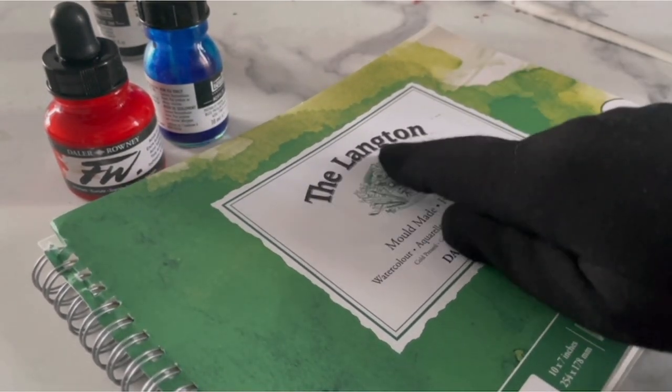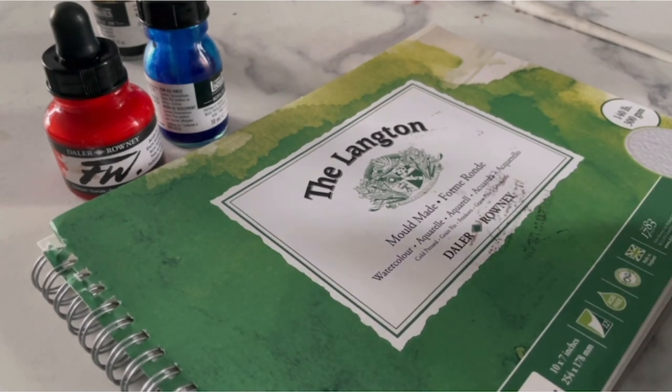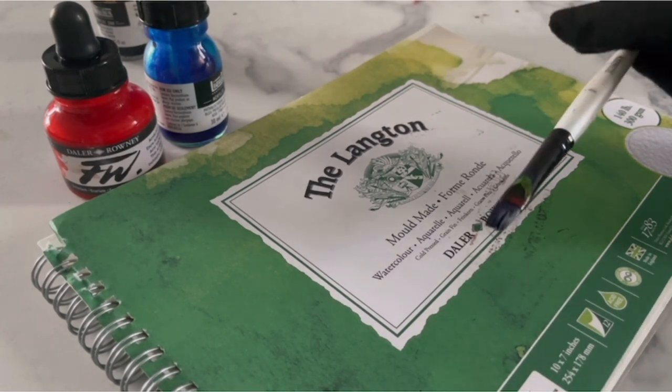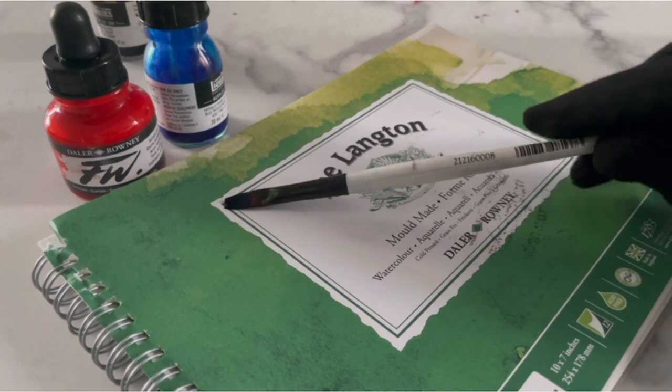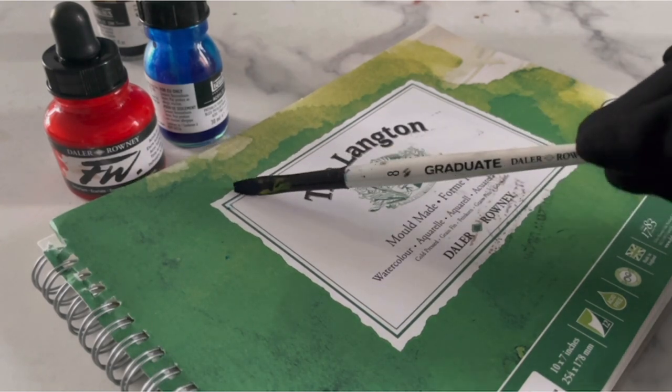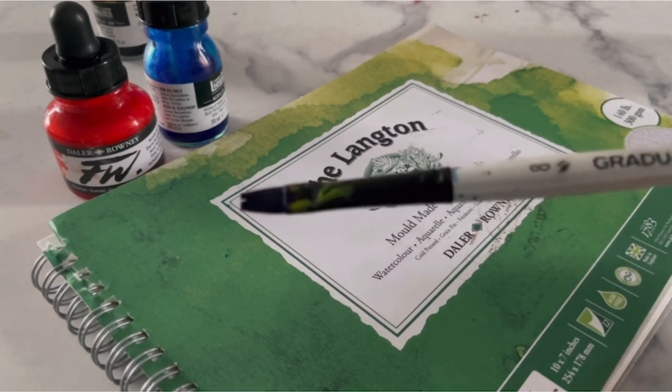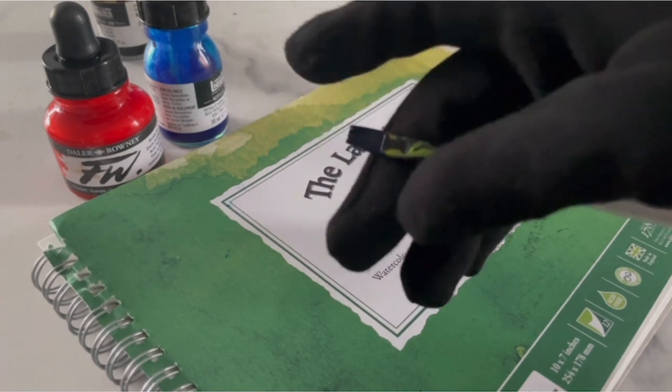To write my calligraphy, I'm using the Daler Rowney mixed media pad which you can get from Hobbycraft. I'm also using the Daler Rowney flat shader brush to write my calligraphy today. All the supplies I'm using in this video will be listed in the description box below, so if you want to purchase any of them, just check there.